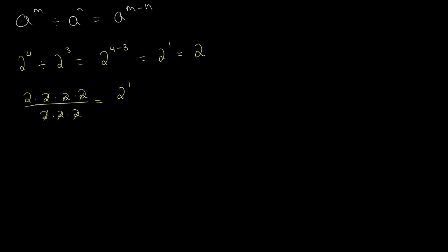It's more likely that you'll come across this rule in the form of fractions. So let's say two to the fourth divided by two to the third — you just write that as two to the power of four minus three. It's essentially the same thing, just written differently.